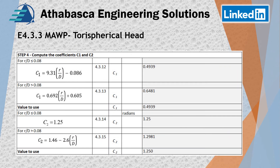In step four we continue our calculations, looking at the R over D ratio — that's why we did those setups before. If R/D is less than or equal to 0.08, we calculate one factor; with the other condition where it's greater, we use the 0.439 value. Then we continue on calculating C2 — a very similar procedure. The equations are not too bad, and we've referenced the equations from the 2019 edition. We calculate the C1 and C2 values in step four.